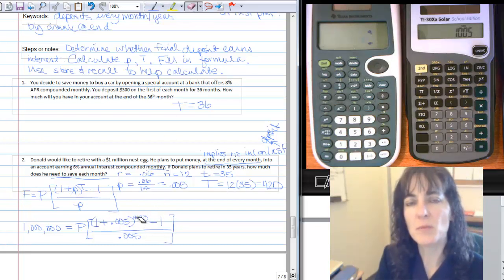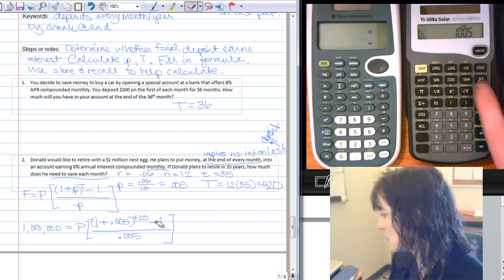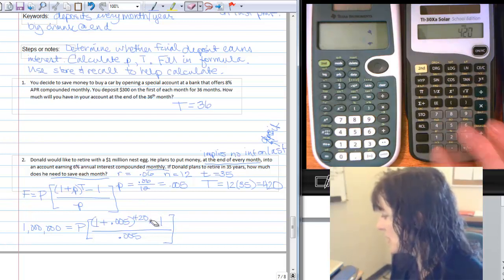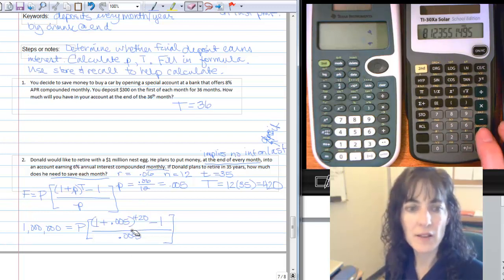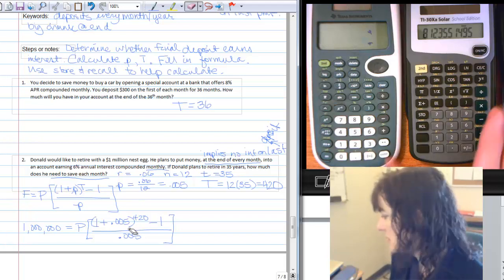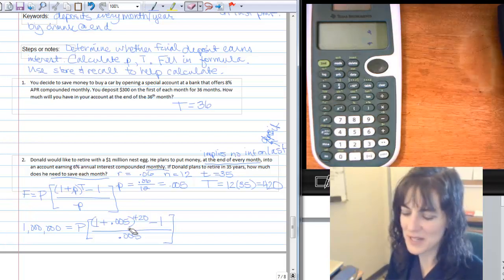The next thing I have to do is take it to the 420th, so I'll use my to the button on this calculator, 420th, and I get this value 8 point, nope, I can't ever read those decimals on that calculator.